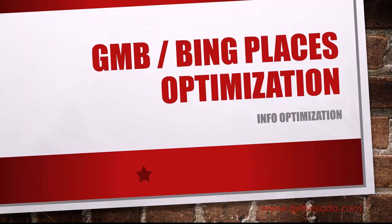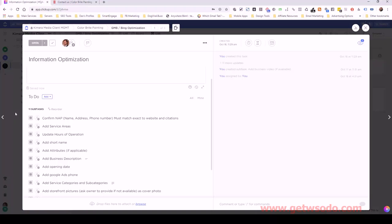Continuing along with our Google My Business optimization, this part is related to the information portion of completing the Google My Business listing. Let me pull up ClickUp. This is the information optimization task and inside of it I have all of these subtasks listed.